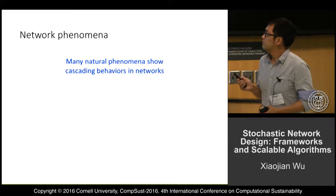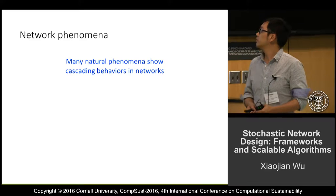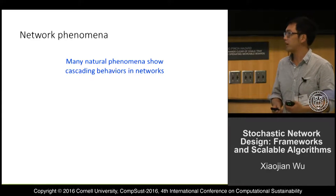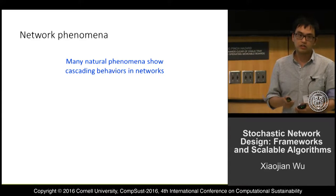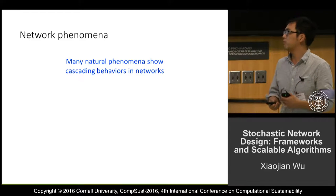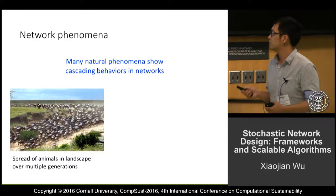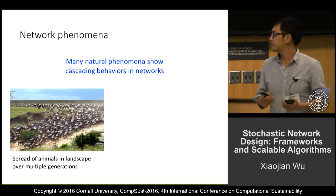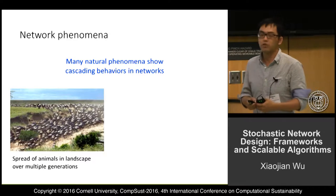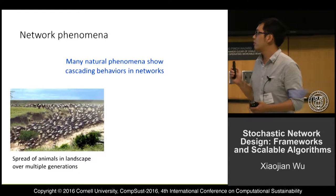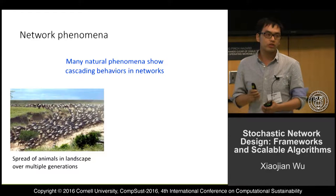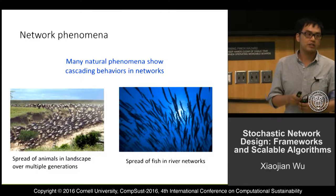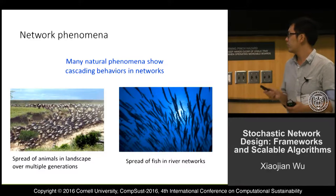Many natural phenomena show cascading behavior in networks — that is, the phenomenon spreads through the networks, and this can be modeled as a stochastic process. For example, animals may expand their population and spread into a landscape over multiple generations, and fish, once they enter a river, may spread into the river network.